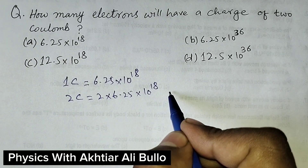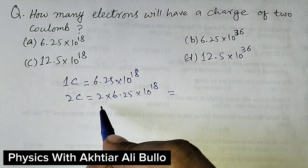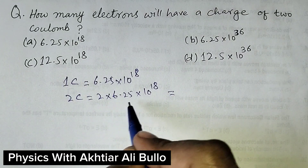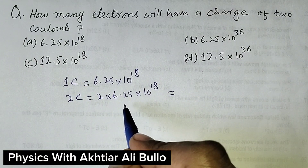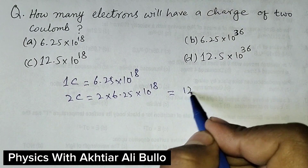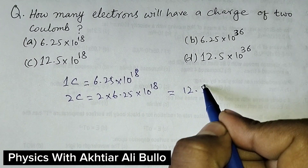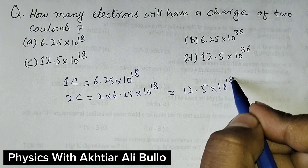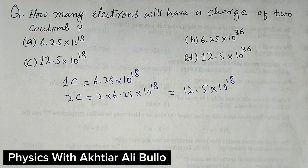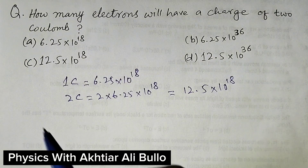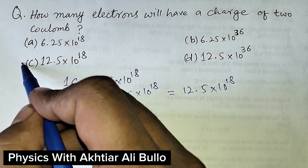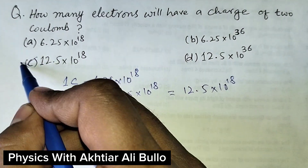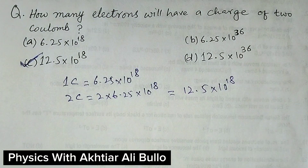When we multiply 2 with 6.25, we get 12.5 into 10 raised to power 18 electrons. So the correct option is C: 12.5 into 10 raised to power 18 electrons.